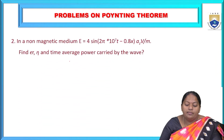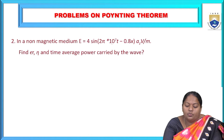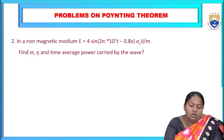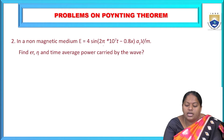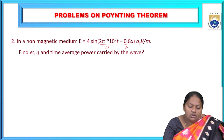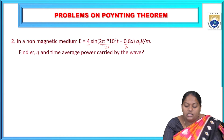The second problem: in a non-magnetic medium, E = 4 sin(2π×10⁷t − 0.8x)·az volts per meter. Find epsilon, eta, and the time-average power carried by the wave. From the given E, omega = 2π×10⁷, beta = 0.8, and the amplitude E_m = 4.